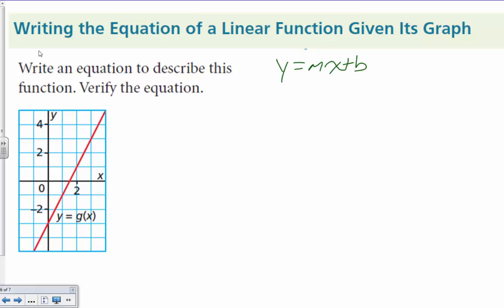The key pieces of information we need are m and b. B is the y-intercept, m is the slope.